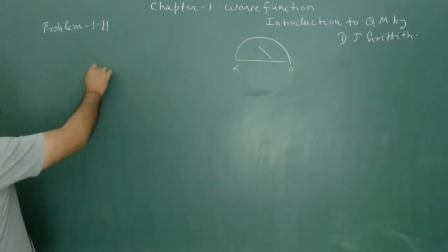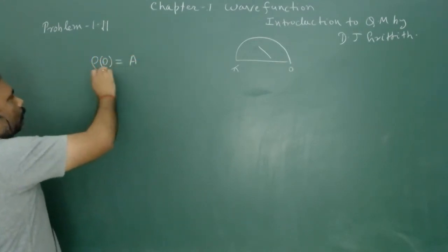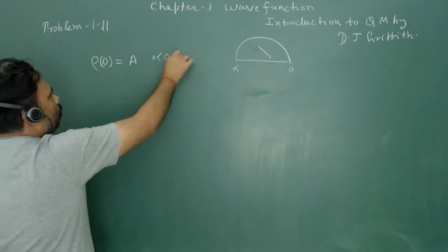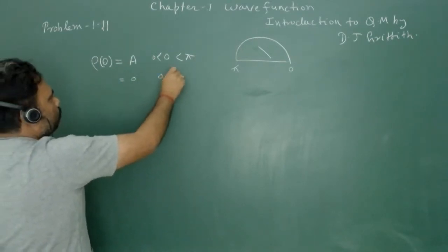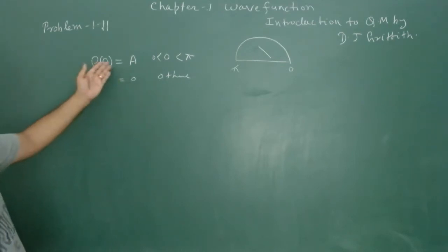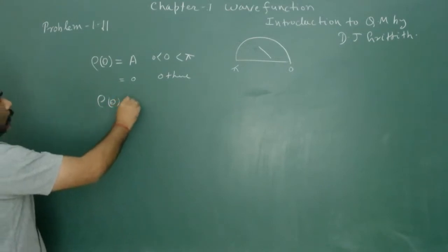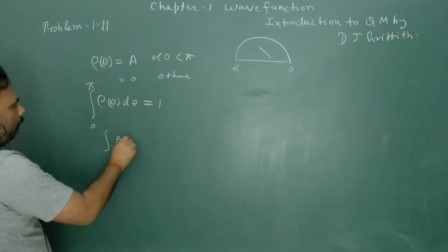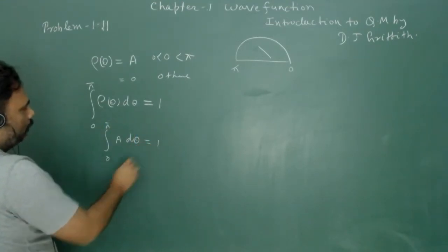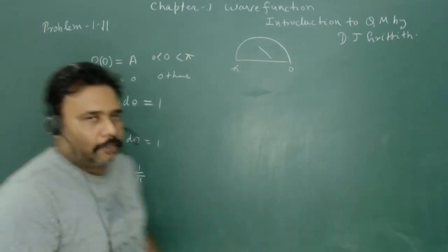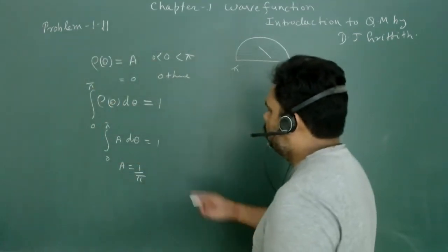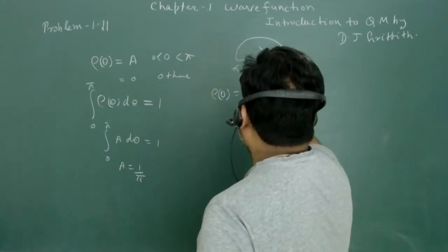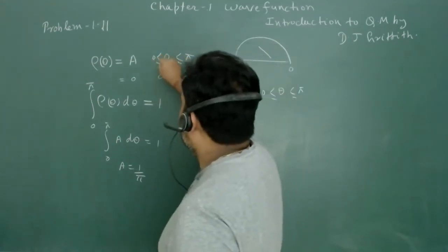According to the problem, the probability density ρ(θ) is constant because for every theta the needle has equal probability of settling. So ρ(θ) = A between 0 and π, and 0 otherwise. Since the total probability must equal 1, we integrate A dθ from 0 to π and set it equal to 1, giving A = 1/π. So ρ(θ) = 1/π for θ in [0, π], and 0 otherwise.